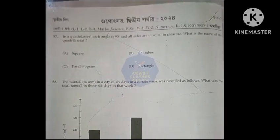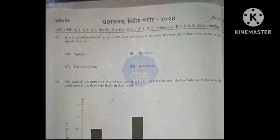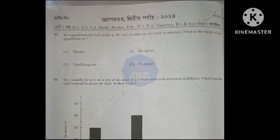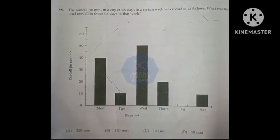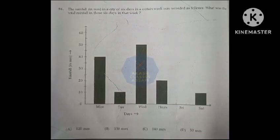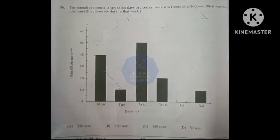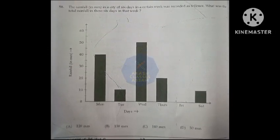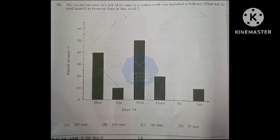In a quadrilateral, each angle is 90 degree and all sides are equal in measure. What is the name of the quadrilateral? Option A, square. The rainfall in a city over six days. What was the total rainfall in those six days? Option B, 130 millimeter.